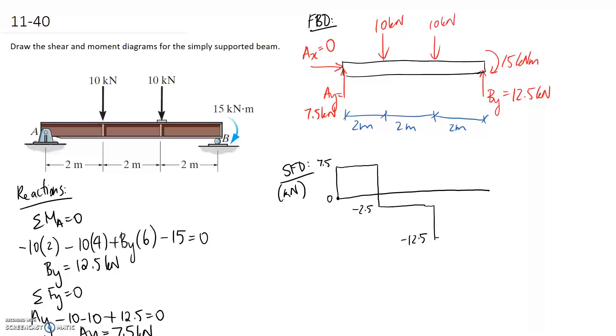Nothing's happening through this final section so it remains flat. And we're then pushed back up to 0 by this 12.5. Negative 12.5 plus 12.5 takes us back to 0. That's our shear force diagram.